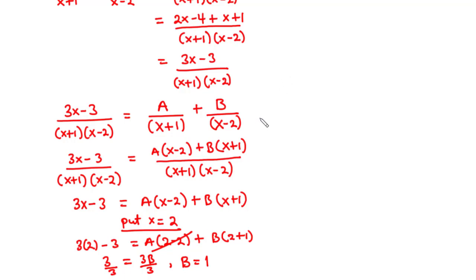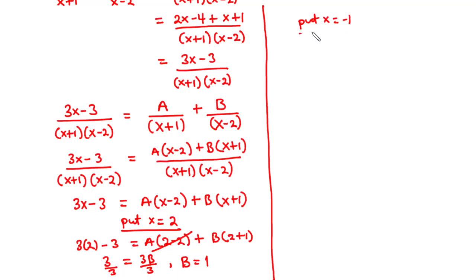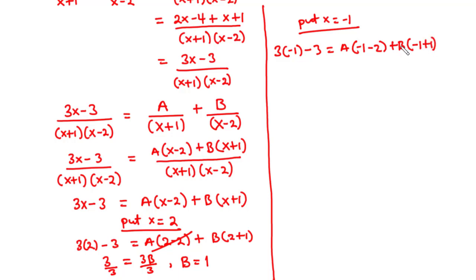Now let's find a. We put x equals negative 1 so that b goes to 0. Then 3 times negative 1 minus 3 equals a times negative 1 minus 2. That is negative 3 minus 3, which is negative 6, equals negative 3a. Dividing through by negative 3, we have a equal to 2.